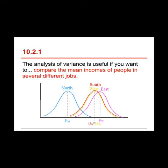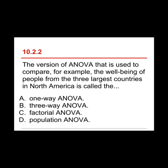If you want to compare the means of income of people in several different jobs — as shown in this chart — the analysis of variance lets you compare the population means for several different populations. Here we have four populations, and that's a situation where you want to use the one-way analysis of variance.